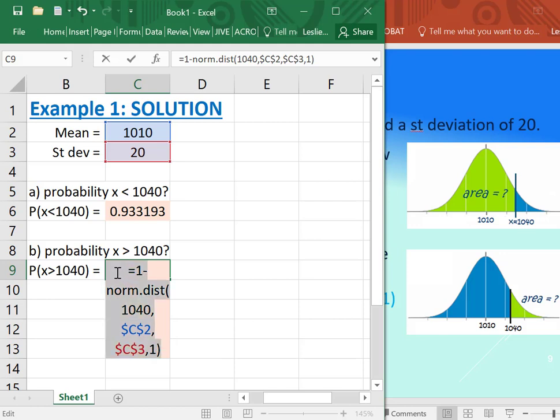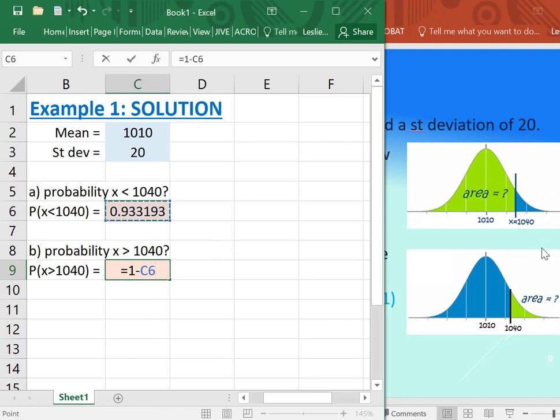Or a little bit quicker, since we already have the calculation, I can just take one minus the 0.993, because that was the area to the left of the 1040, and I just want the area to the right, so I just do one minus that.